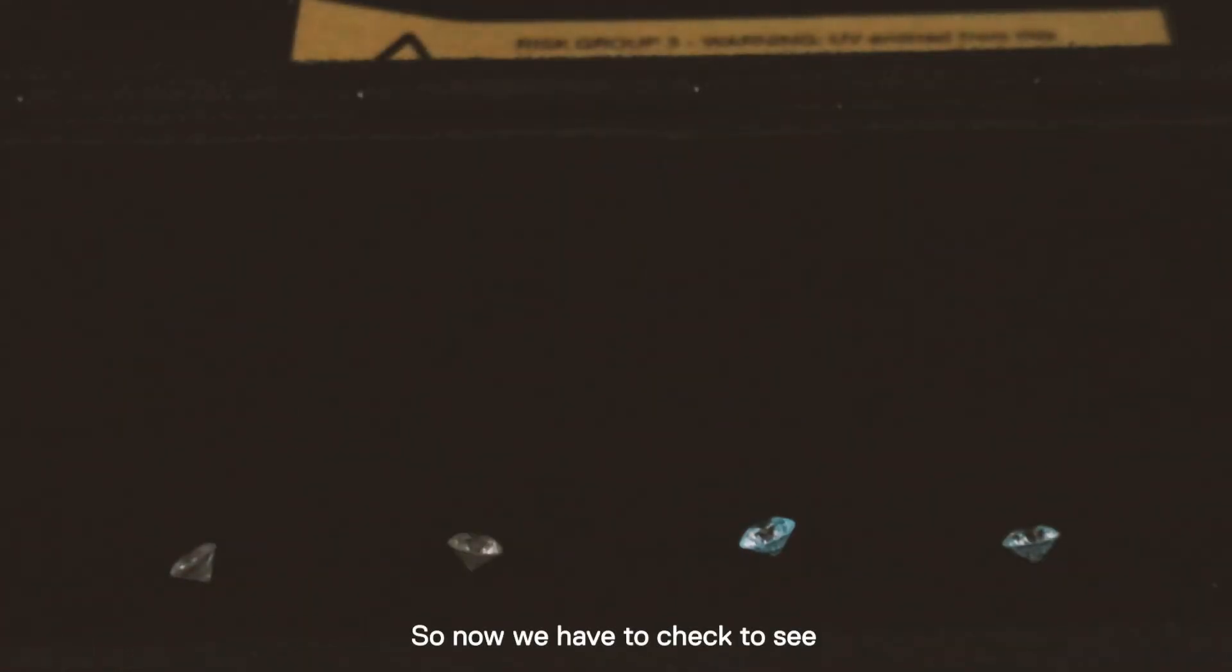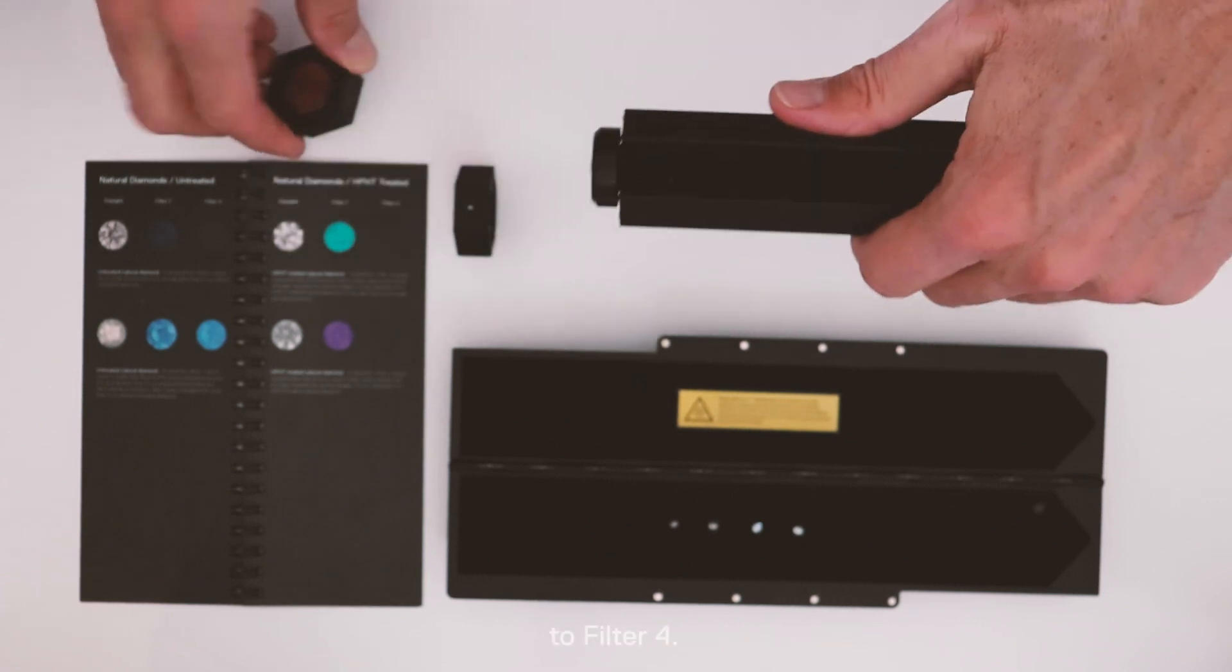So now we have to check to see if any of these diamonds are naturally fluorescent diamonds. To do this, you need to switch the filter to filter number 4. The third diamond fluoresces also using filter 4.